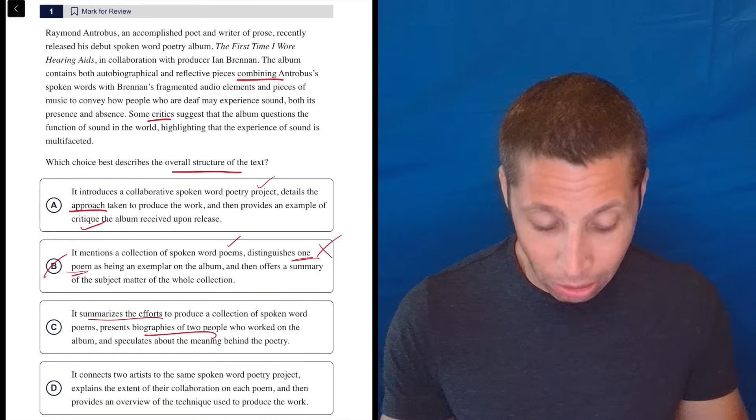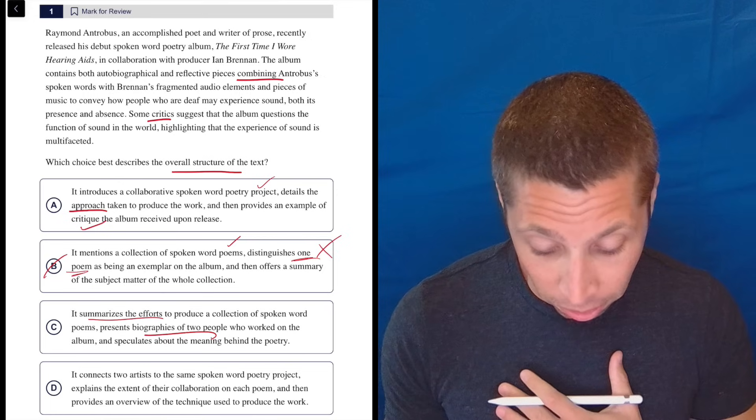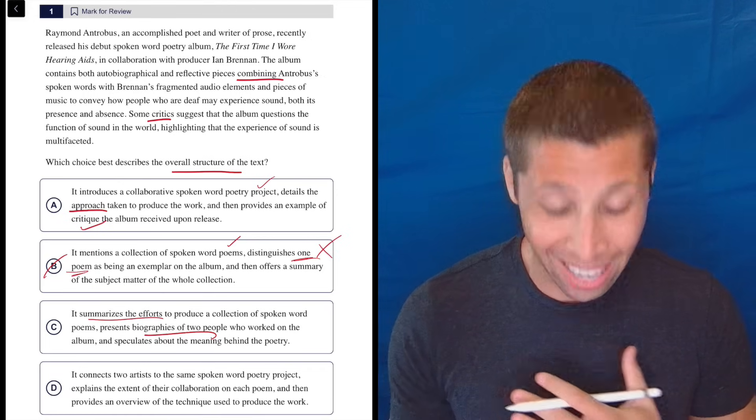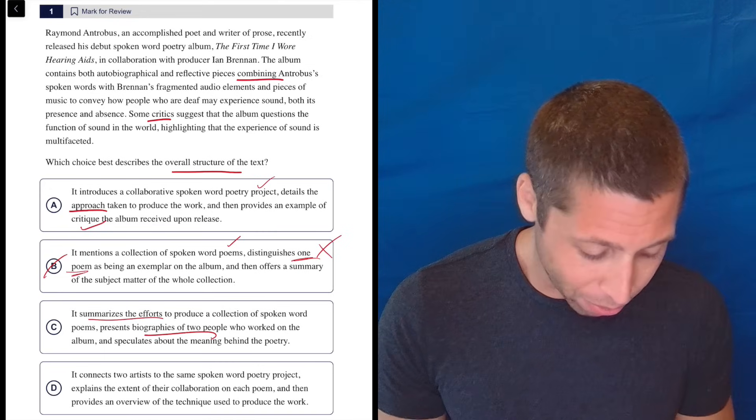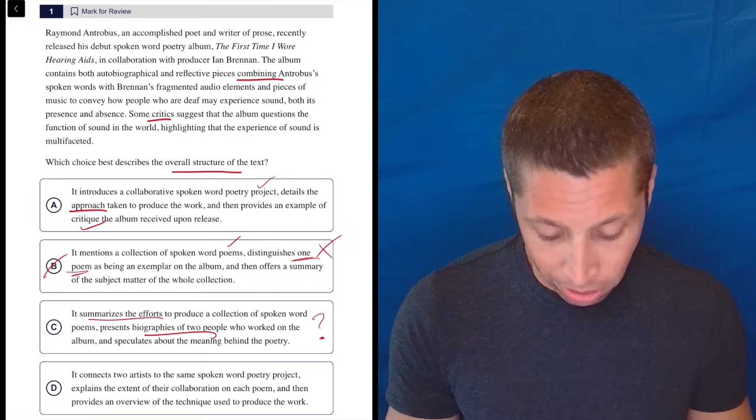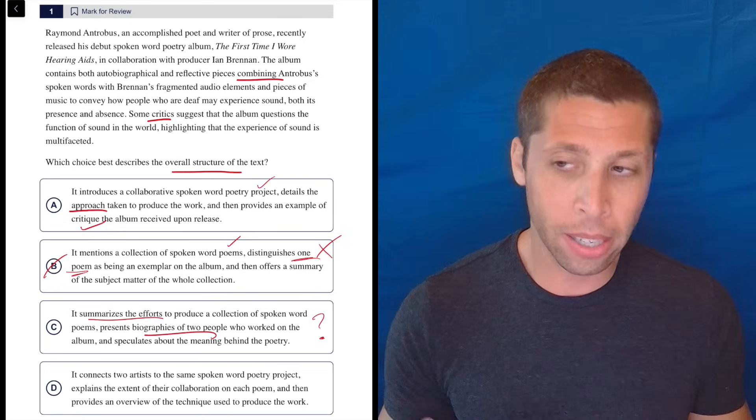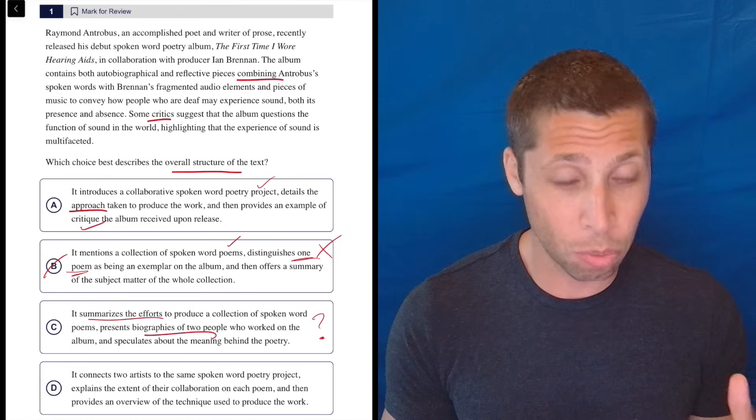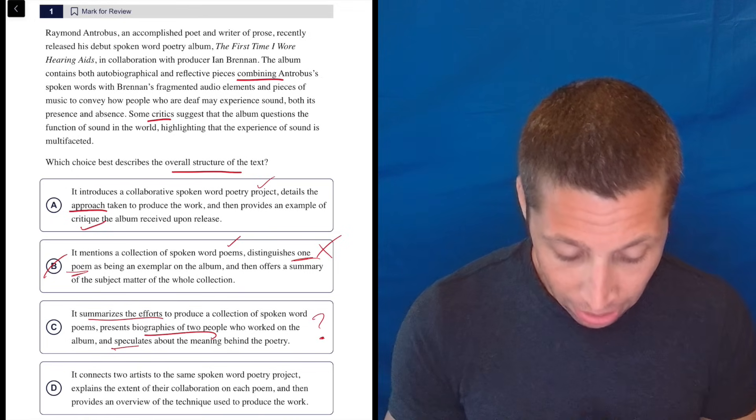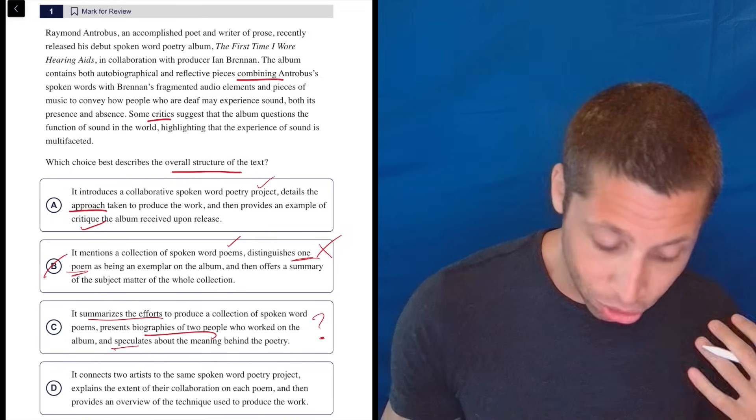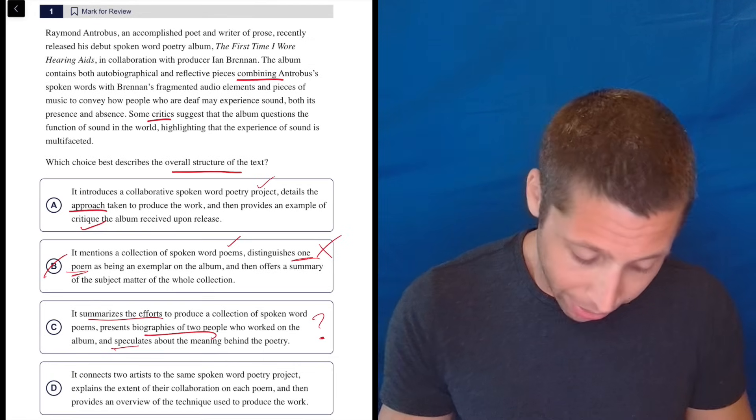Presents biographies of two people who worked on the album and speculates about the meaning behind the poetry. The biography is, do I really learn about these people? It says their names. It says an accomplished poet and writer of prose. That's Raymond Antrobus. But is that really a biography to just kind of say what the person does? So I don't know. Maybe I keep this around. But these feel like they're off. It feels like that's not really what's happening there. I could see some overlap with the passage with this choice, but I don't feel like it's really doing that. And is it really speculating about the meaning? Maybe the critics suggest that this is what it's doing. I don't know. I don't love it, but we'll keep it.